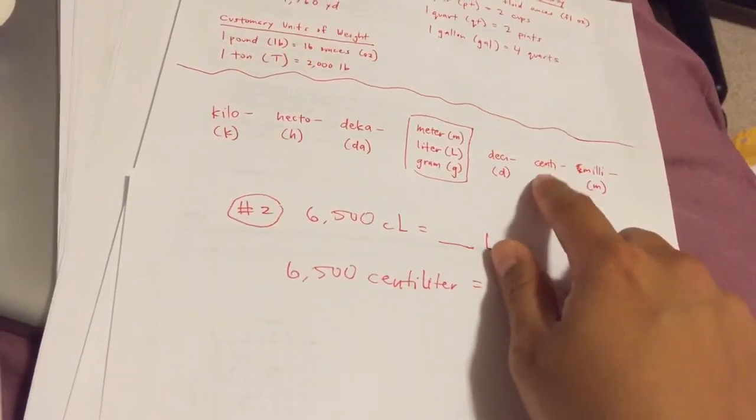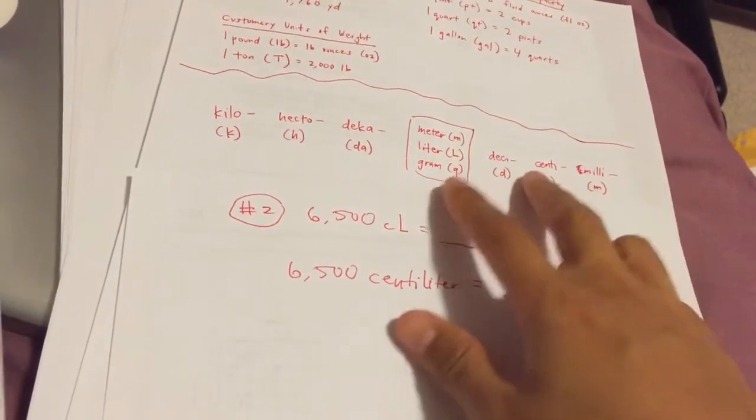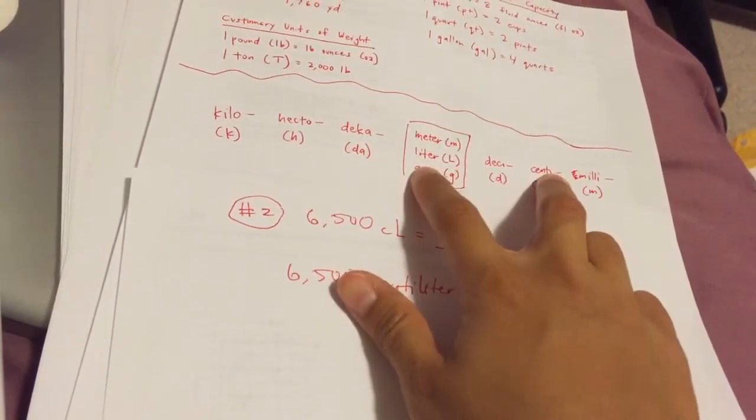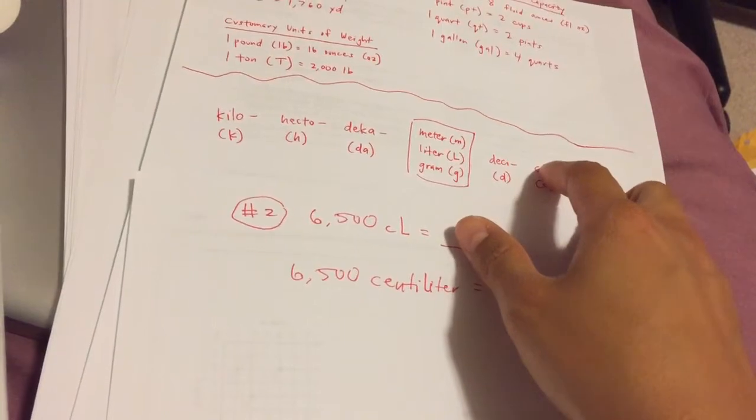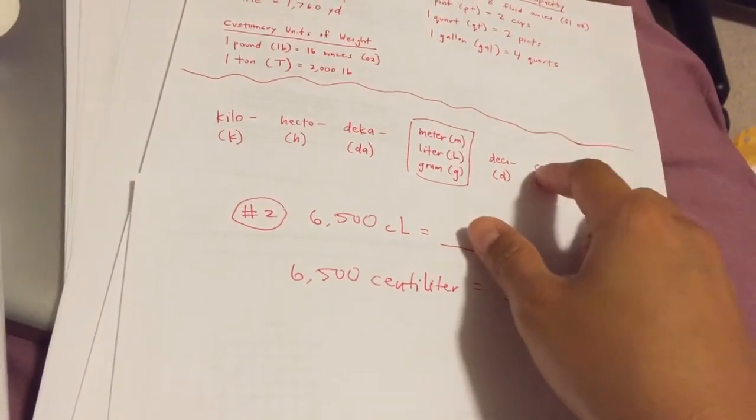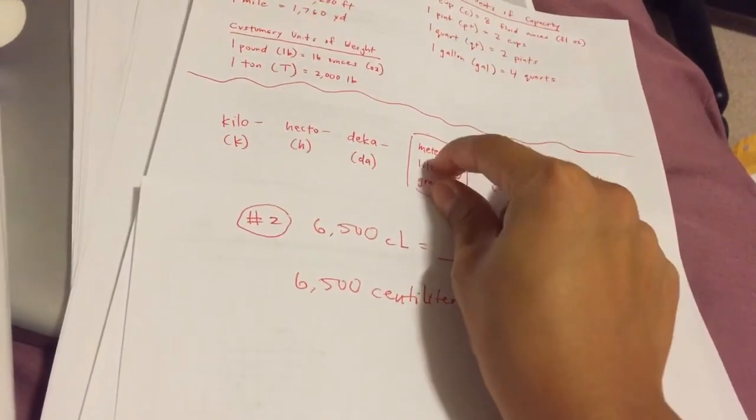Step one, just write out the shorthand version. 6,500 centiliters to blank liters. Here we're starting at centiliter and we're going to liter. If we start here and we're going here, we're counting how many times do we shift. We're shifting one, two times.